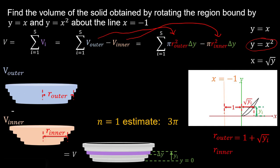Next we find R sub inner, which is a little bit easier. At the same Y sub i value, the inner radius extends from x equals negative 1 out to the line y equals x. From y equals x, x just equals y, so this x distance is simply Y sub i. Therefore R inner equals 1 plus Y sub i.